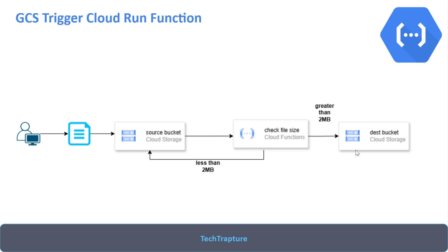So this is the simple demo we are going to create. First we'll write our Cloud Function code, then go to the Google Cloud Console to create the source and destination storage buckets, and then we'll test our demo.